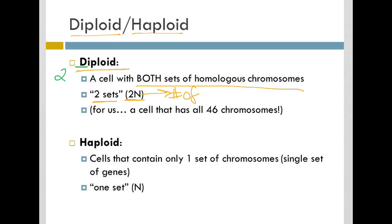Or I guess number of pairs and chromosomes in a set. So that's the number of chromosomes in a set. Our n number would be 23 for humans.